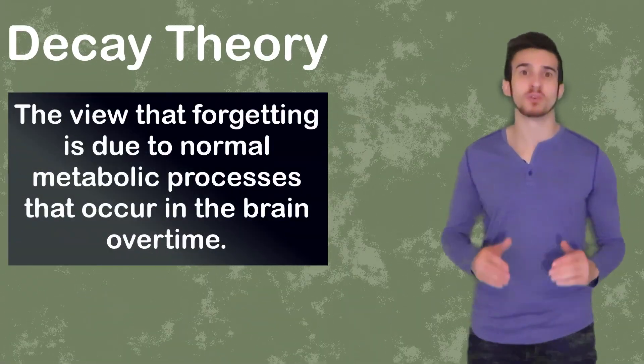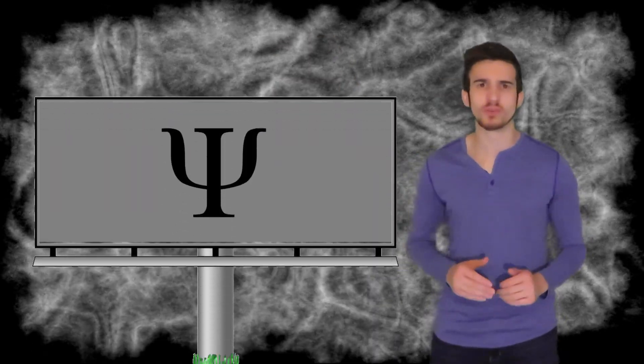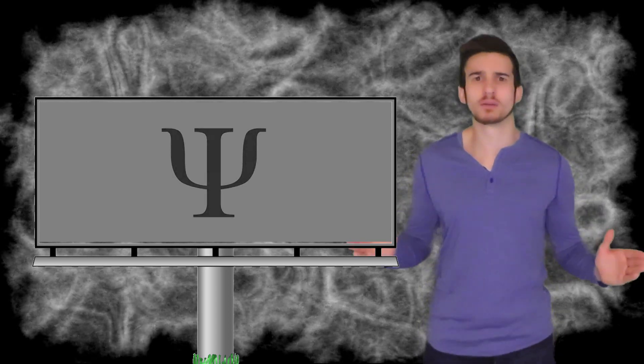The decay theory, on the other hand, will be a biological explanation as to why we forget. The decay theory explains forgetting as a normal metabolic process that occurs in our brain over a period of time. This idea states that when a new memory forms, a metabolic process in the brain occurs. If this memory is not constantly refreshed, it will eventually decay over time. Think of an old billboard you see while you're driving around. All the letters and pictures are going to be faded because of the effects of weathering and the outside environment. The billboard is not refreshed, so it simply starts to decay or fade away. Eventually, it will be completely blank. Kind of like if a memory is not refreshed, it will eventually decay away.